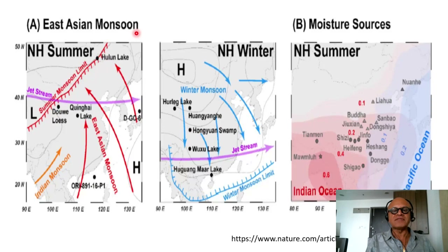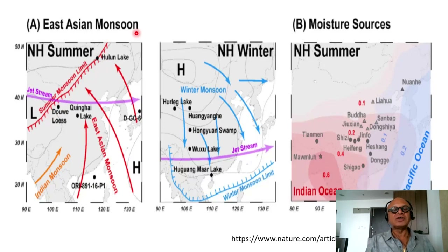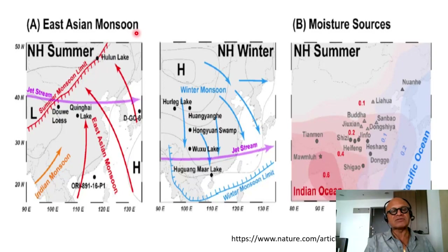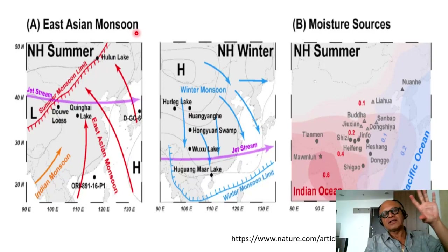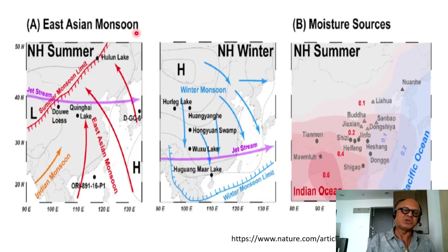Summer monsoons get most of the attention because they tend to cover upwards of 80% of the annual rainfall. But in India, for example, the Northeast monsoon covers only a small part of the country, and most of the attention during the Holocene has focused on the summer monsoon regions like the Mohenjo-daro Harappa, which we will look at.